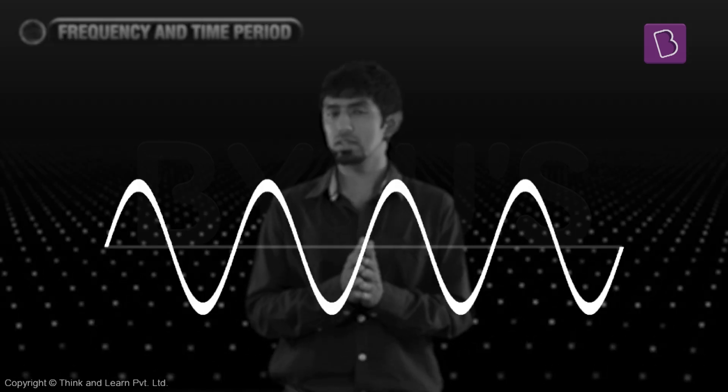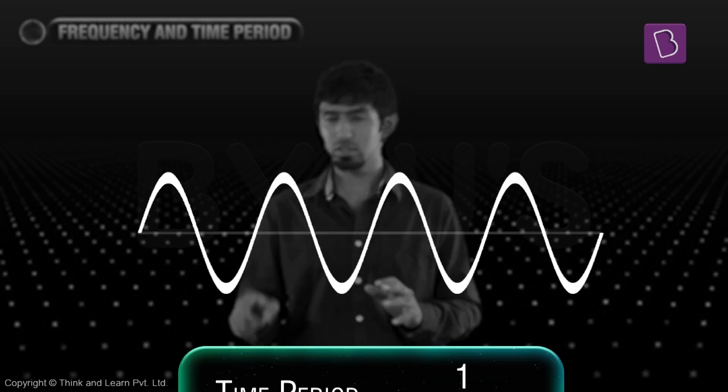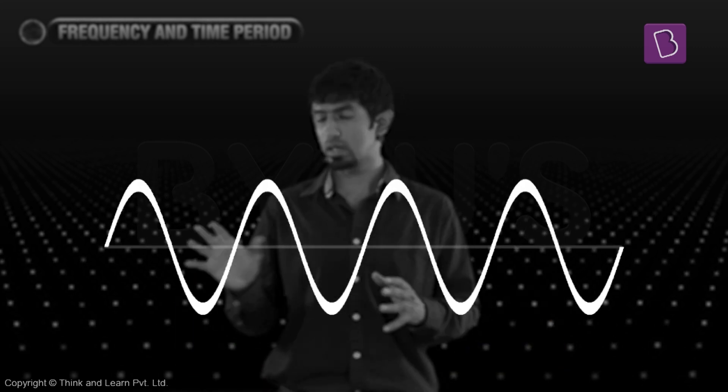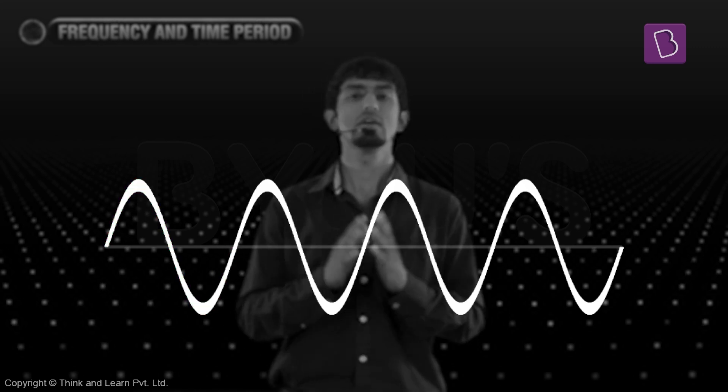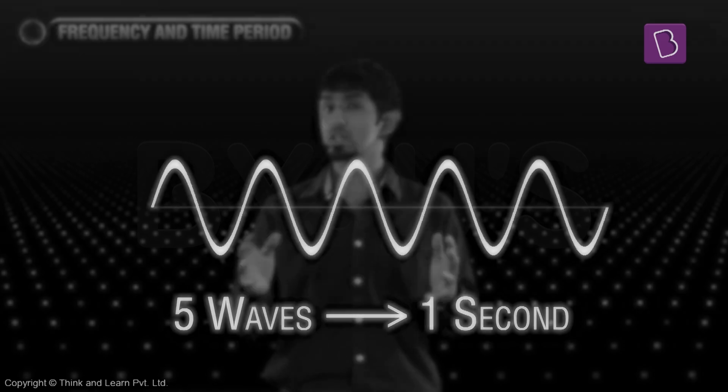Now it's very easy to calculate that—that's going to be exactly one by the frequency. Now why is that true? From now, let's just call it waves, okay? A crest and a trough put together, let's call it one wave. So therefore, let's say I have five waves in one unit of time, in one second. Then what is my frequency?